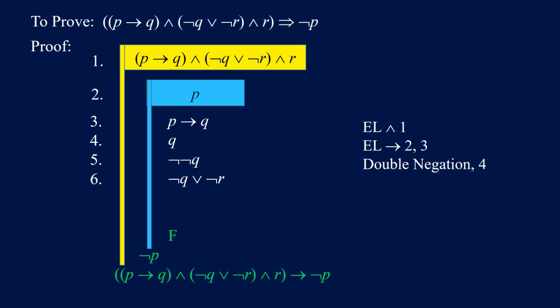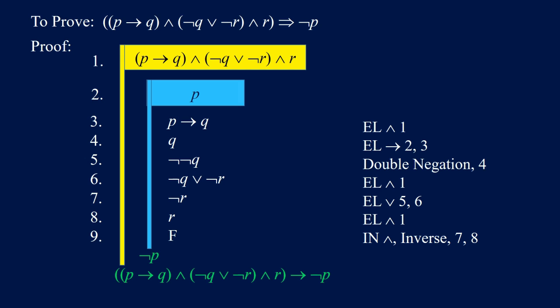We get not Q or not R from 1 by elimination of AND, indicated with 6. We get not R by applying elimination of OR to 5 and 6, indicated with 7. Next we get R from 1 by elimination of AND, indicated with 8. Now we have not R in step 7 and R in step 8. By applying introduction of AND and also negation introduction we get FALSE, indicated with 9.